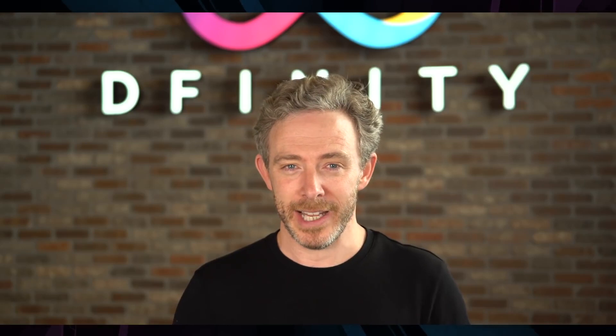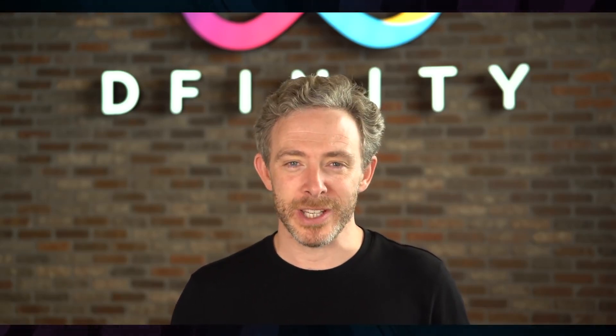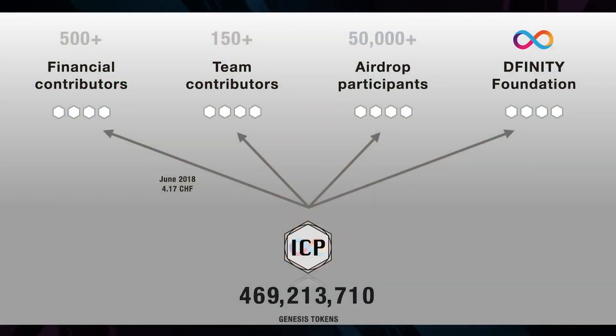ICP is primarily a governance token that can be used in the management of the blockchain network created by the Internet Computer Protocol, which is where the letters come from. When the network launches, there will be just over 469 million of these tokens in existence.